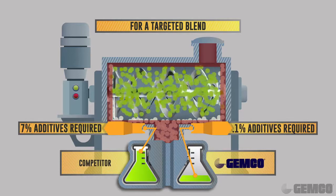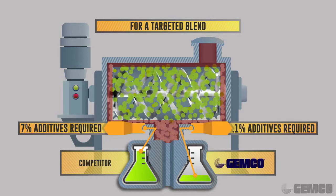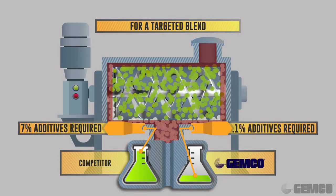On the other hand, Jemco blenders not only eliminate the need for key blends but also produce better distribution of active ingredients.